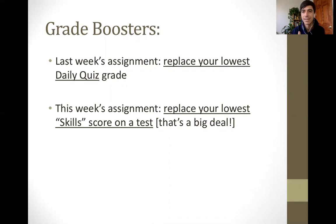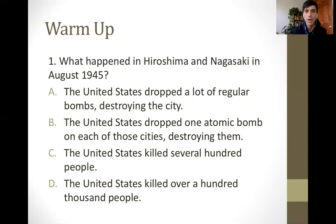So you should have done this warm-up question: what happened in Hiroshima and Nagasaki in August 1945? The correct answer is B — that the United States dropped one atomic bomb on each of those cities, completely destroying them. On August 6th they bombed Hiroshima and on August 9th they bombed Nagasaki, using brand new technology developed during World War II.